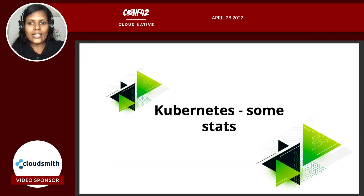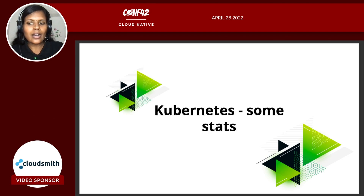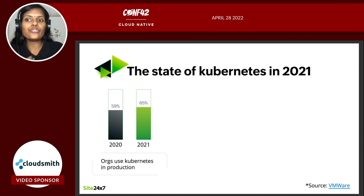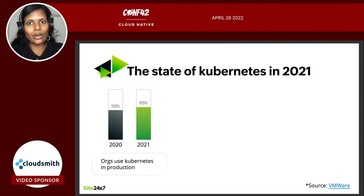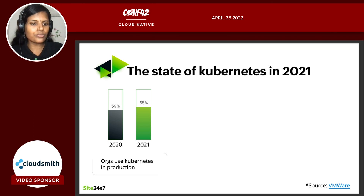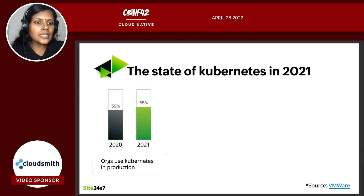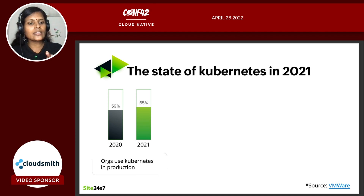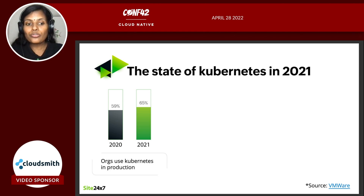Let's look at some quick stats on Kubernetes adoption. I read through an article from VMware about the state of Kubernetes, comparing 2020 and 2021 surveys. Organizations that use Kubernetes in production has grown from 59% in 2020 to 65% in 2021. We are seeing more and more organizations using Kubernetes not just for development, but also for production. Kubernetes can be deployed on-premise or in multi-cloud environments and still work together.